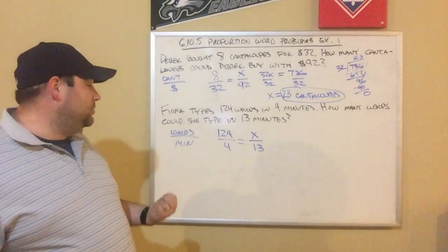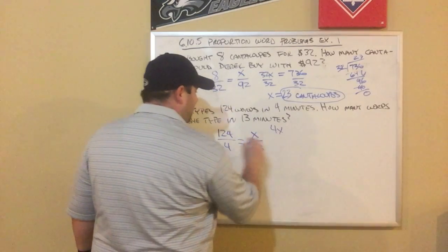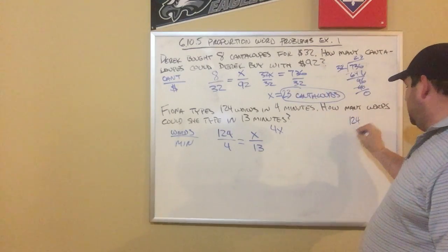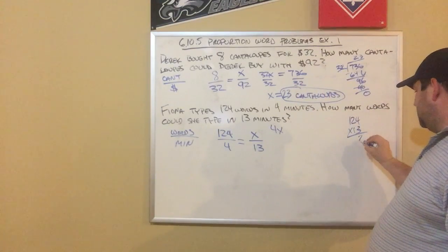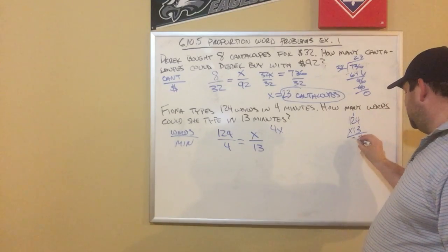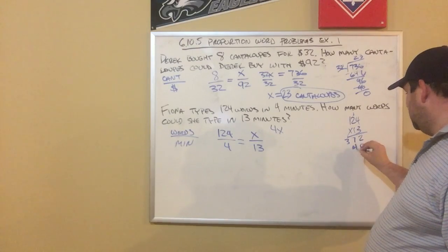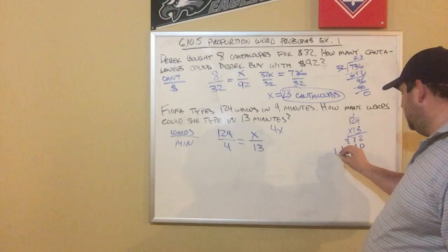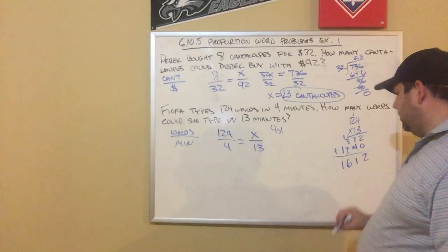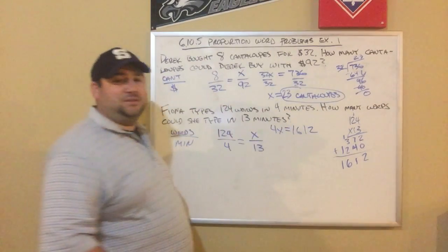We're going to cross multiply. 4 times x is 4x. Now 124 times 13: 3 times 4 is 12, carry the 1; 3 times 2 is 6 plus 1 is 7; 3 times 1 is 3. Then multiply by 1: 1 times 4 is 4, 1 times 2 is 2, 1 times 1 is 1. Add those up and I get 1,612. So 4x = 1,612.